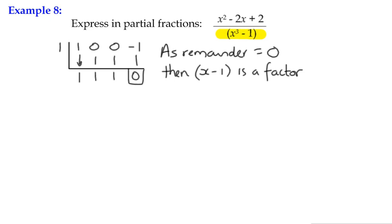And more so, we can say that this was 1, 1, 1 here. This means that as well as x minus 1 being a factor, the other factor will be 1x squared plus 1x plus 1. In other words, we can say that x cubed minus 1 is the same as x minus 1 multiplied by x squared plus x plus 1.